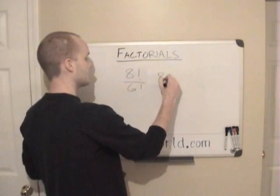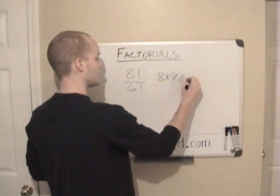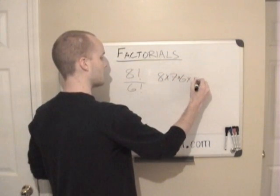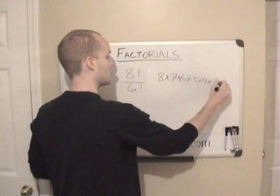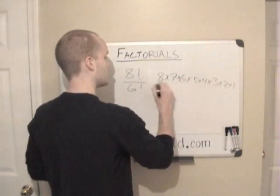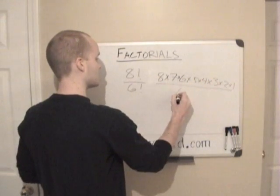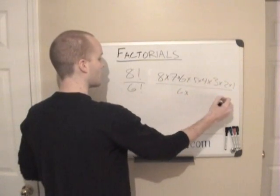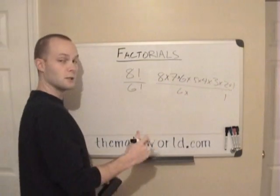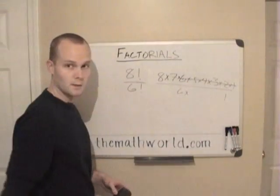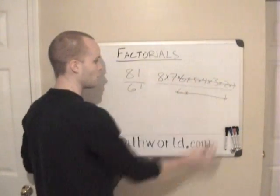So this is 8 times 7 times 6 times 5 times 4 times 3 times 2 times 1. And this is 6 times all the way down to 1. And what you can do is, you can cancel out 6 all the way to 1 and 6 all the way to 1.